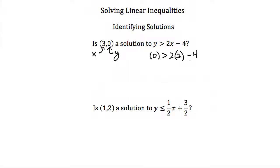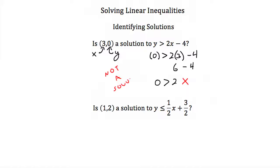Now we'll simplify the right-hand side: 2 times 3 is 6, and then we subtract 4, which equals 2. So our right-hand side is equal to 2, and our left-hand side is still 0, leaving us with 0 needs to be greater than 2. Well, 0 is not greater than 2. This final inequality doesn't make sense, so that means this point is not a solution to this inequality.